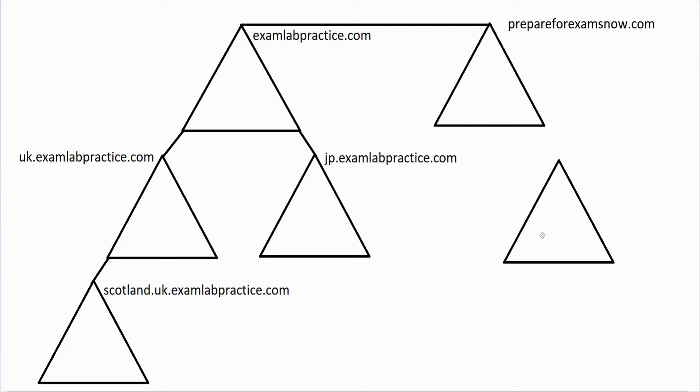And then from there, if I wanted to have a child domain underneath that, I could. For example, perhaps maybe we've got prepareforexamsnow.com with a location that is over in Australia. So maybe I call it au.prepareforexamsnow.com. I'll have to move this up a little bit just because I don't have enough room. I'll just maneuver this a little bit better. And we'll just put the domain name down here like that. And so that indicates now that I've got a total of six domains because there's six triangles, right? There's two trees. So this is a tree and this is a tree. And then we have one forest.